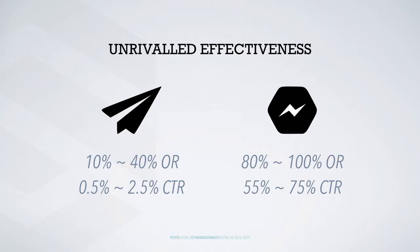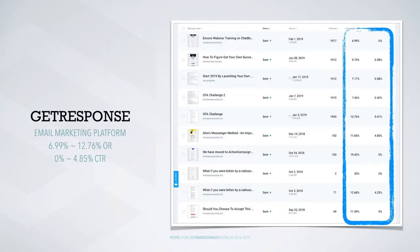Now imagine if you can take your communications open rate from 10 to 80% — wouldn't that make a huge difference in your conversion? So this is my GetResponse open rate — 6.99%, 9.73%, around 7%, 12%, 11%, 19%. My rate is way less than 29%, and if you look at the click-through rate I have zero-something percent, 4.85%, 4.2%, 3%, zero percent — it is terrible.